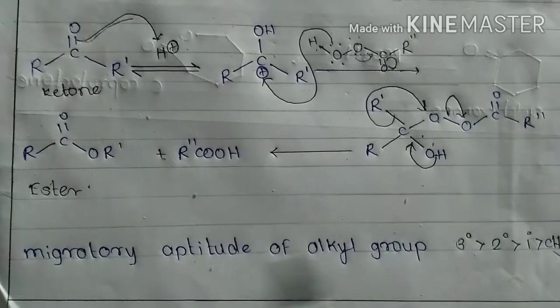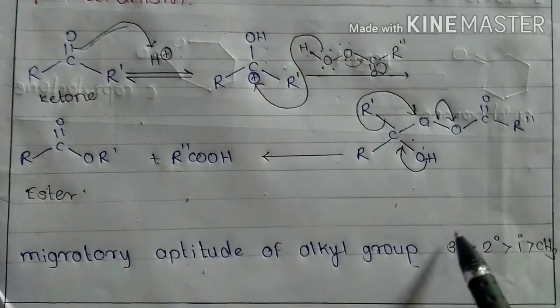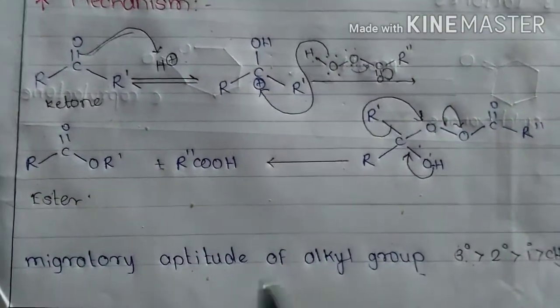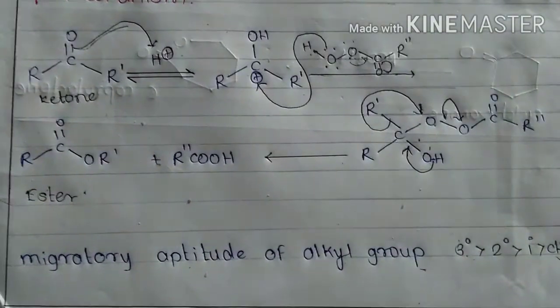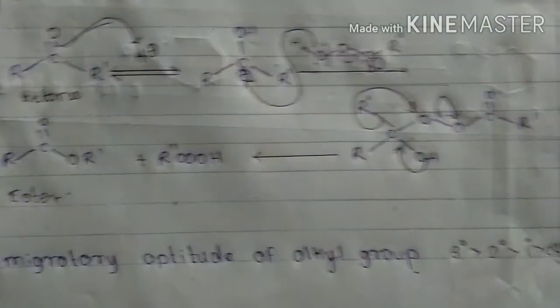So the migratory aptitude of alkyl groups is tertiary alkyl easily migrates more than secondary alkyl. Secondary easily migrates more than primary and primary easily migrates more than CH3 group.